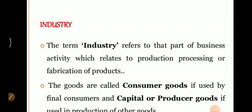Industry का मतलब होता है कि कोई भी product को बनाना — हम pharmaceutical select करते हैं। इसलिए industry का मान यह रहेगा कि different types के dosage forms बनाते हैं जो कि last consumer तक पहुंचता है। उसको हम consumer goods बोलते हैं, और जो capital या producer goods होता है जो production के द्वारा use किया जाता है, यह सब industry के अंतर्गत आता है।